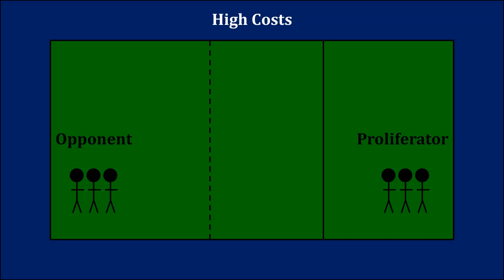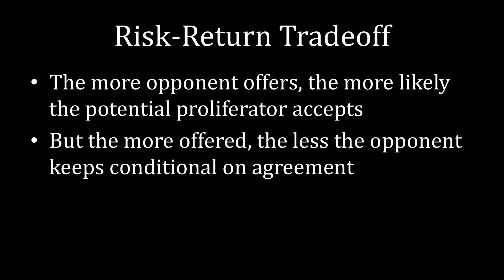Recalling the central lesson from the previous lecture, the opponent might have a hard time distinguishing between a low-cost and a high-cost type of potential proliferator. That's because the opponent might not have a perfect idea of what the potential proliferator's domestic nuclear industry looks like and how competent it is, or how politicians within the potential proliferator feel about developing nuclear weapons more broadly. Given this uncertainty, the opponent faces what's known in bargaining theory as a risk-return tradeoff.